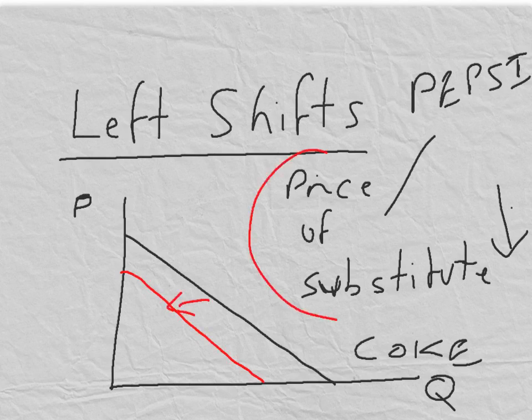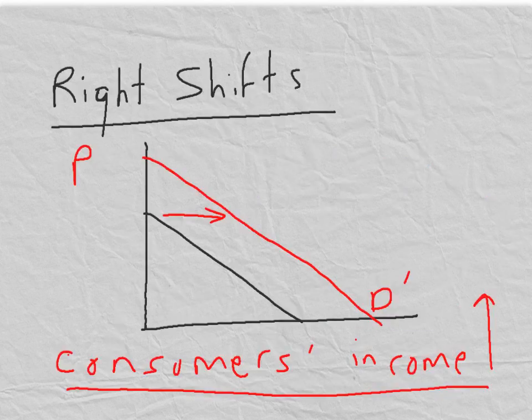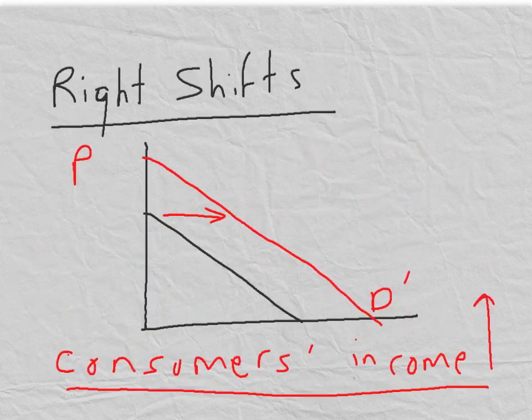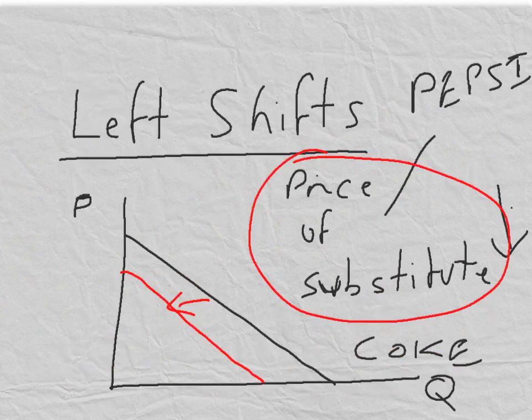Again, the price of a substitute is one of those four factors that we mentioned that we assumed was not changing when we drew the demand curve. So if any of these factors does change, it leads to a shift — either a right shift or, in this case, a left shift in the demand curve.